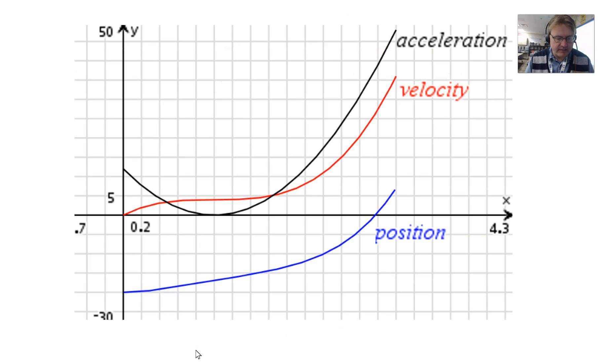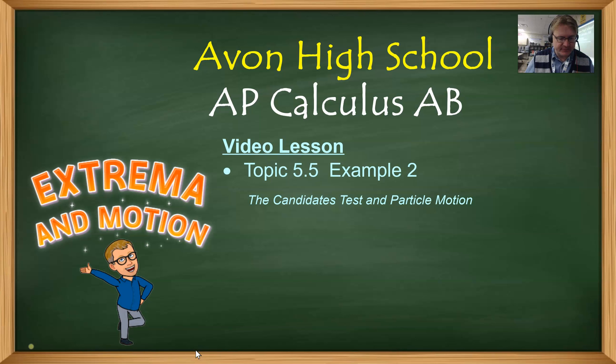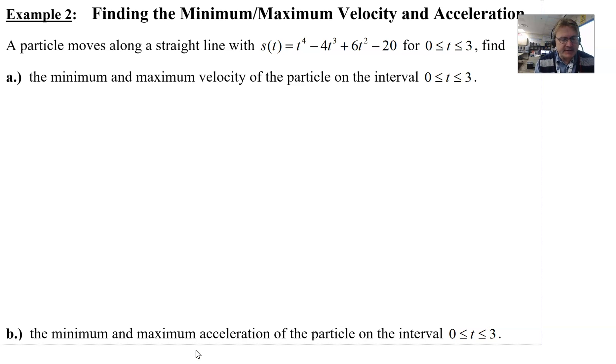So why don't we all take a look at our example 2 here - finding the minimum maximum velocity and acceleration. The question reads a particle moves along a straight line such that s of t is t to the fourth minus 4t cubed plus 6t squared minus 20 for a time increment of 0 to 3. Find in Part A the minimum and maximum velocity of the particle on the interval from 0 to 3 and then down below in Part B we're asked to find the minimum and maximum acceleration of the particle on the interval 0 to 3.